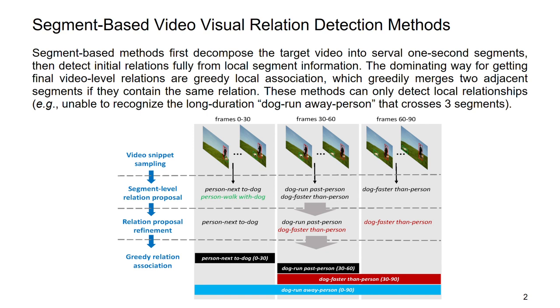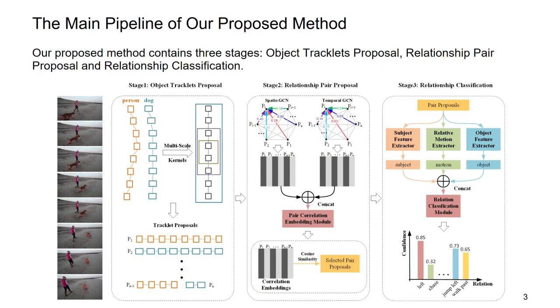These methods can only detect local relations. We propose a three-stage method. The first stage generates object tracklet proposals. The second stage refines proposal features and finds related subject-object proposals. The third stage focuses on predicting the relations between related pairs.